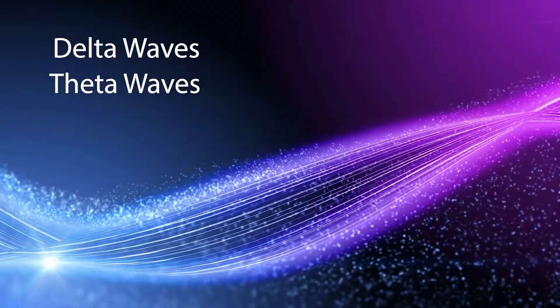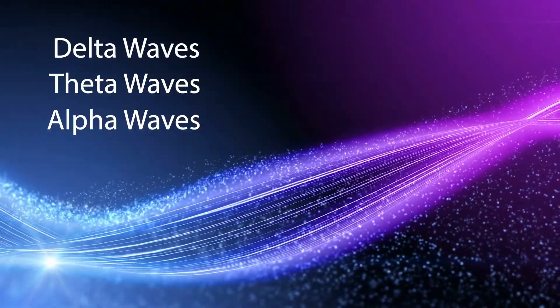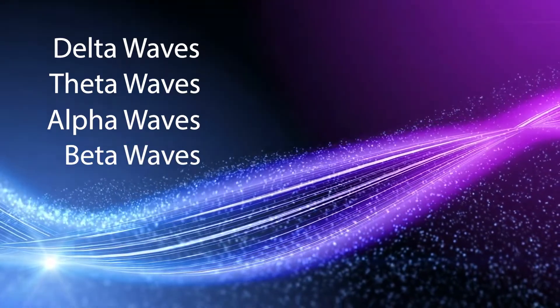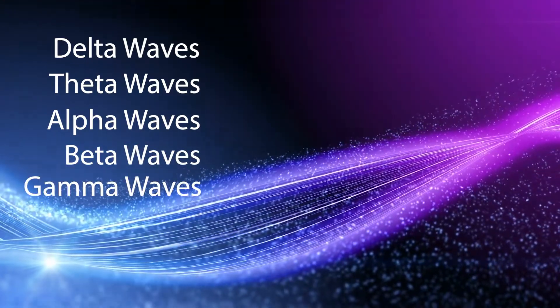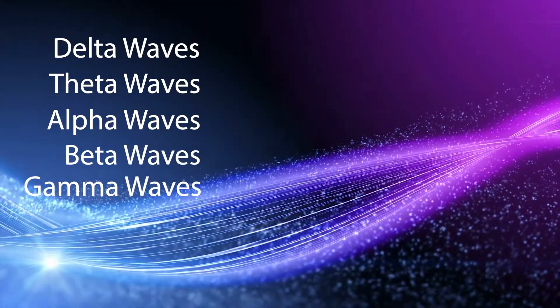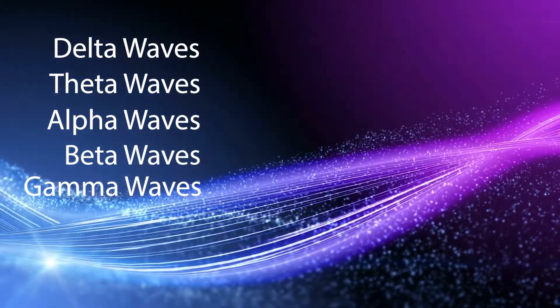So what are the most commonly measured brainwaves? There's delta, theta, alpha, and beta. There's also gamma, but that's not really commonly measured.